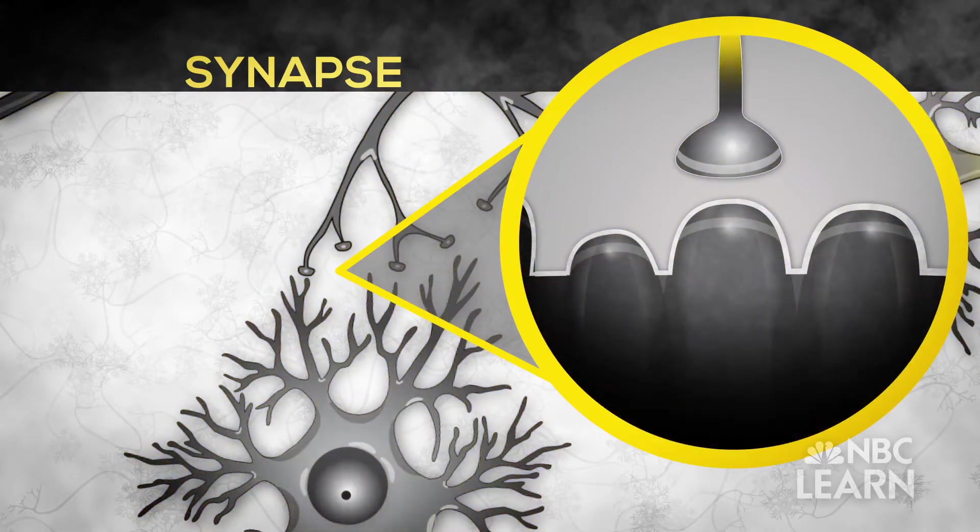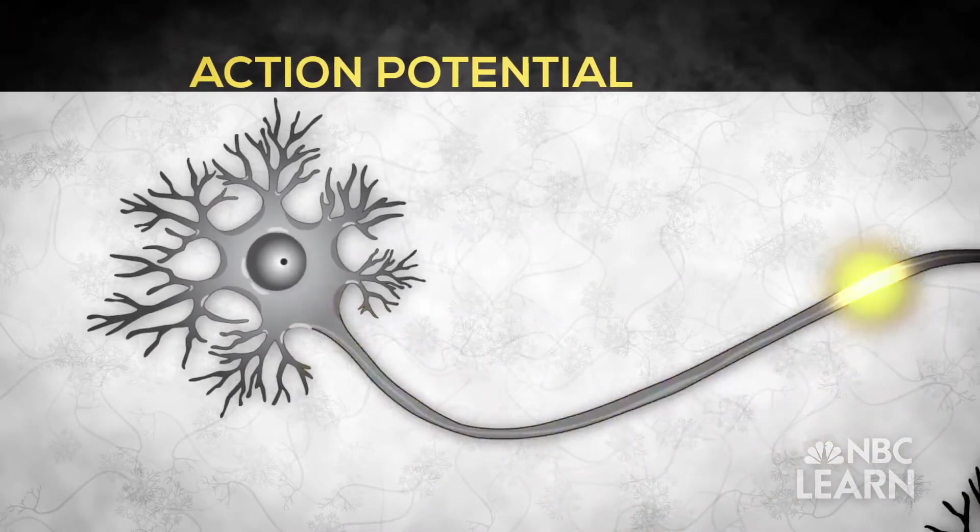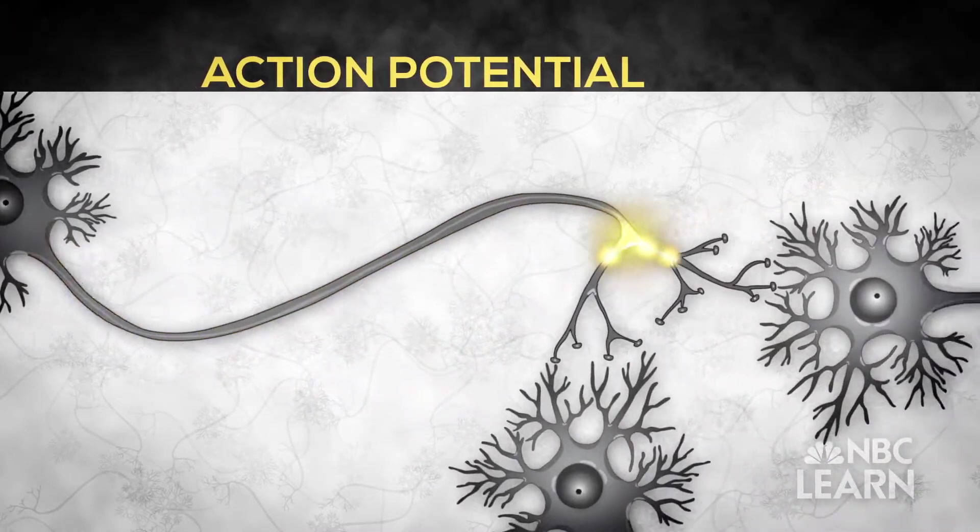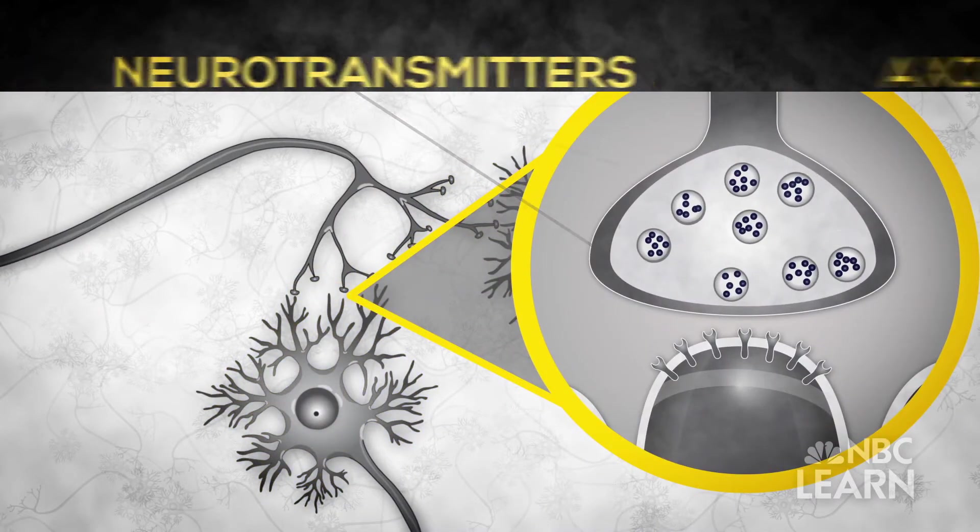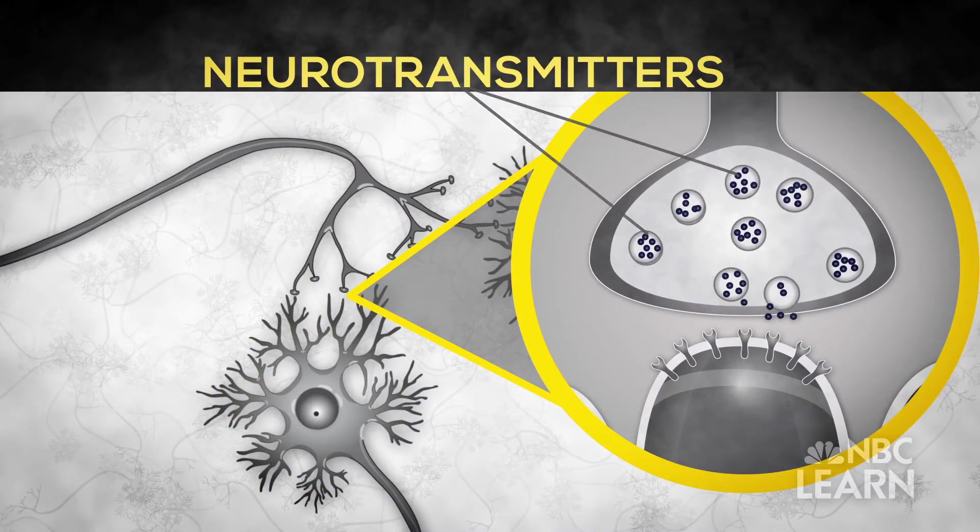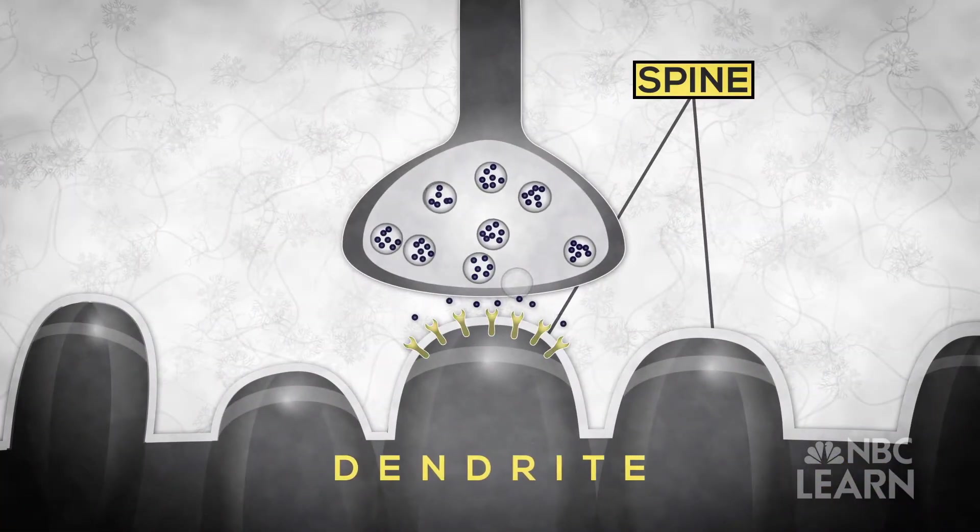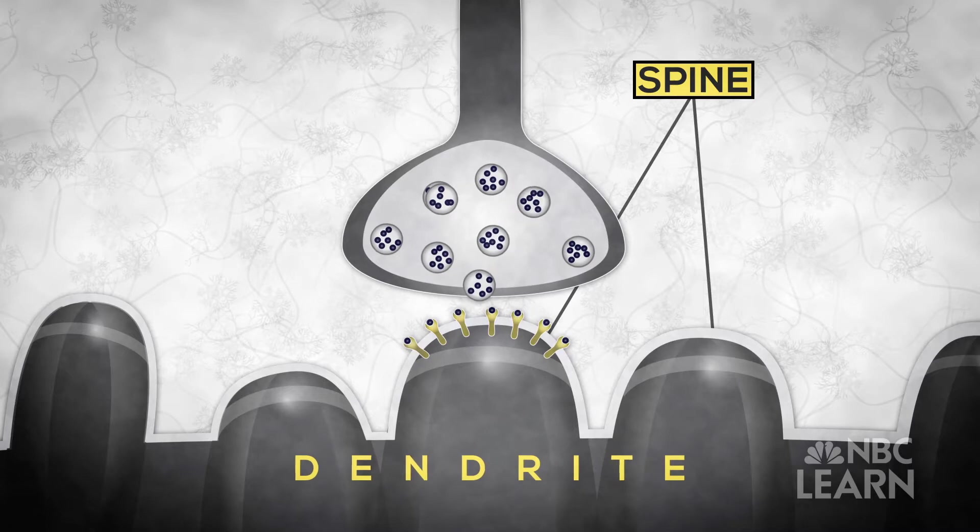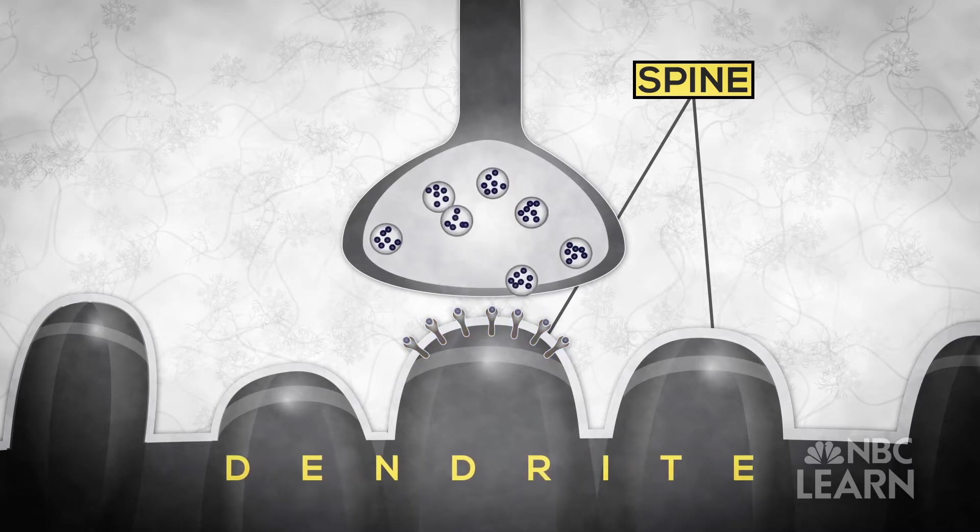Neurons communicate with each other through a junction called a synapse, where information signals are transmitted and received. An electrical signal called an action potential travels down the axon of the talking neuron until it reaches the axon terminal, releasing chemical neurotransmitters into a minuscule gap. Spines on the dendrites of the listening neuron have special protein receptors that bind with the neurotransmitters.